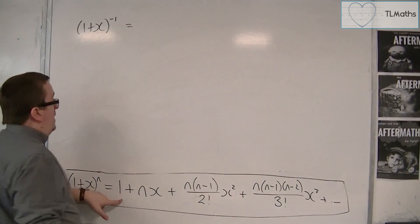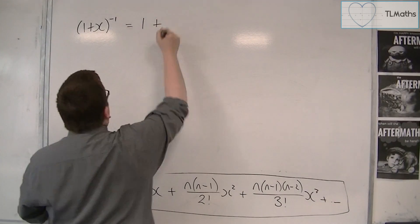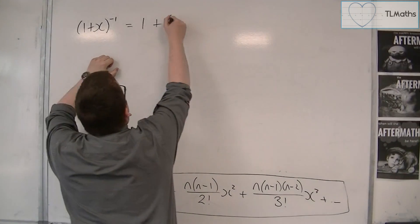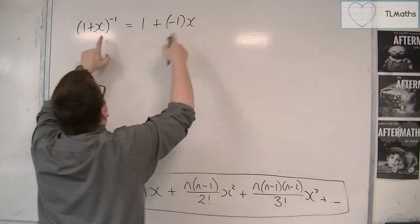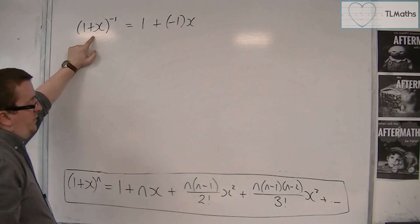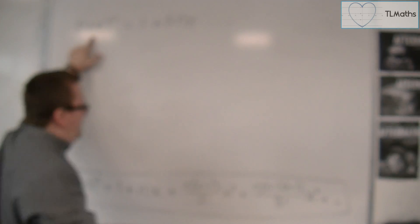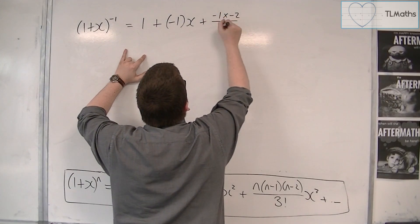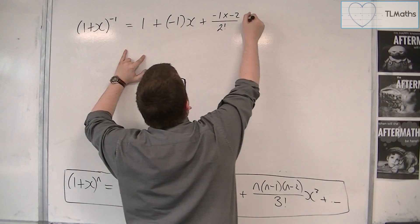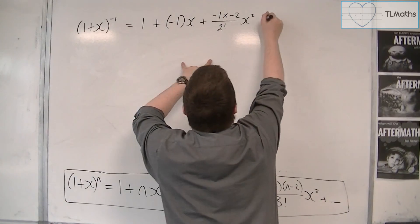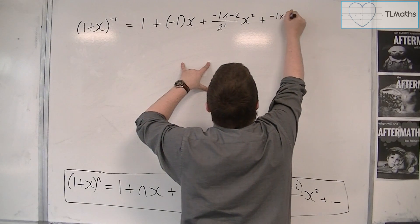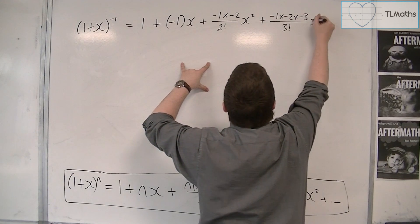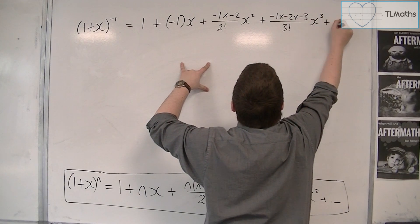This is going to be equal to 1 plus n times x. So n is minus 1, so we have minus 1 times x. That x is exactly the same as the x I've got there, so I don't need to make any kind of replacement. Plus, we've got n times n minus 1, so n times n minus 1 over 2 factorial x squared. Plus, n times n minus 1 times n minus 2 over 3 factorial x cubed plus other terms.